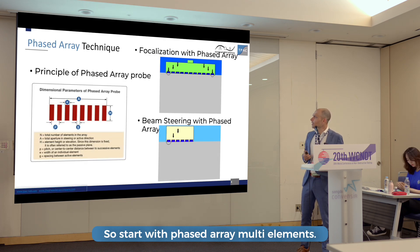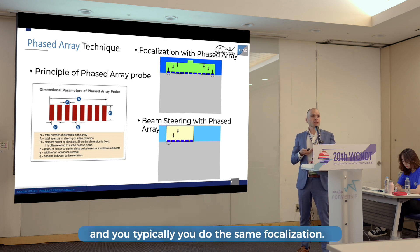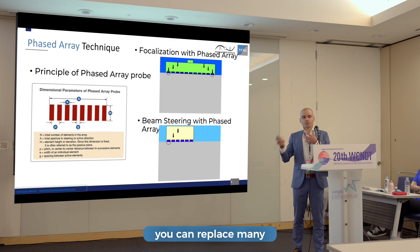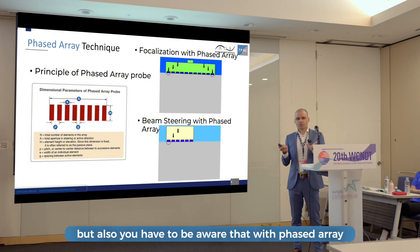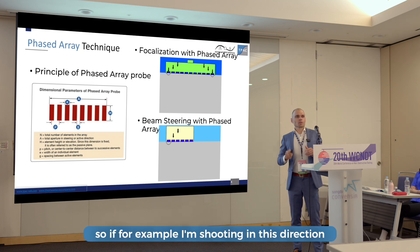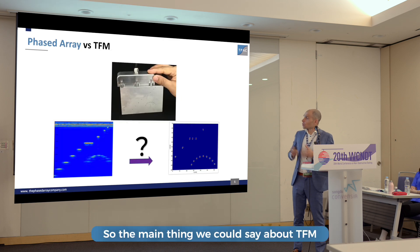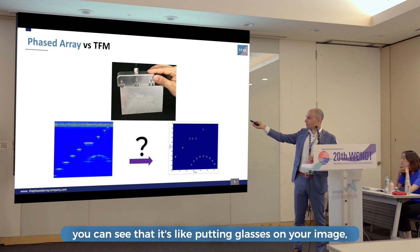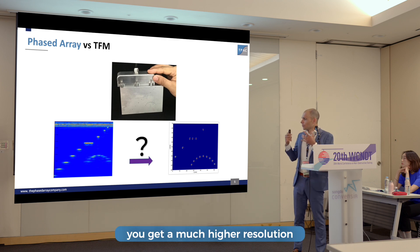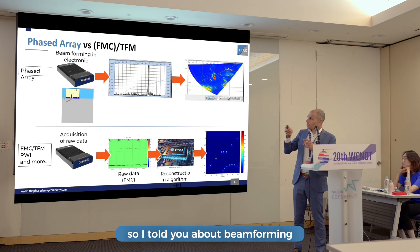Starting with phase array multi-elements: you all know the concept of beamforming — you apply delays, send the energy, receive, and typically use the same focalization. It brings a lot of benefits: you can replace many conventional probes, focalize, and beam steer. But with phase array you typically see only where you look — if I'm shooting in one direction, I only see there. With FMC/TFM we lift that big limitation. It's like putting glasses on your image: you get much higher resolution, but that's only one of the benefits.